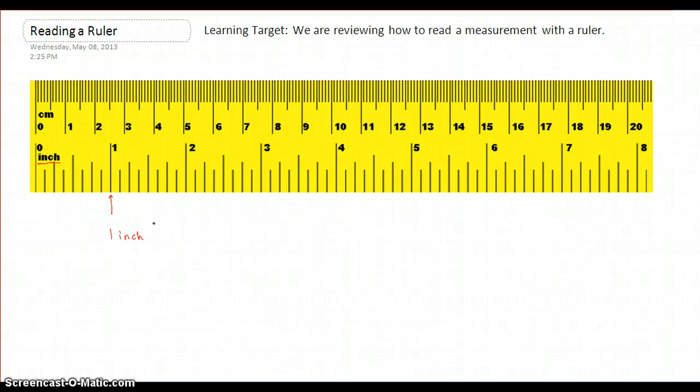But there may be some confusion on what these other hash marks mean. So in this ruler specifically, it's helpful to count how many hash marks or dashes there are between the one and the next number. So I'm actually going to start here. So I have one, this would be considered one.